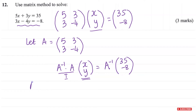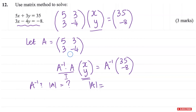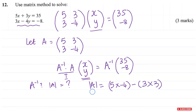So what we're going to do is find A inverse and then multiply by this matrix. To find A inverse, we need to find the determinant of A. To find the determinant, we multiply across this diagonal: 5 times negative 4, and then take away the multiplication of the other diagonal: 3 times 3. So the determinant of A equals negative 20 minus 9, which is negative 29.